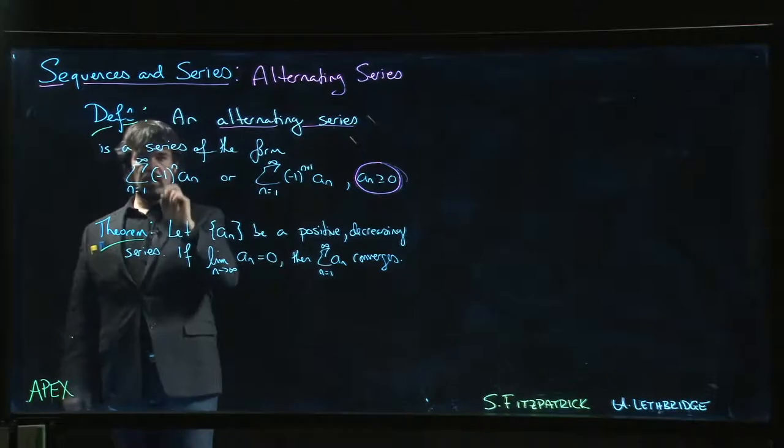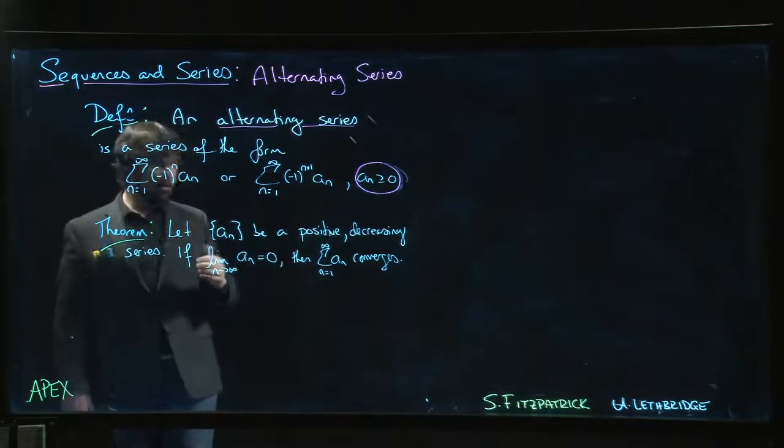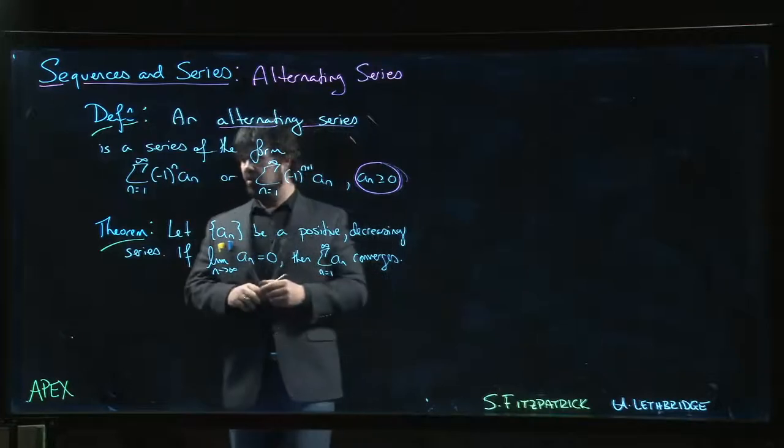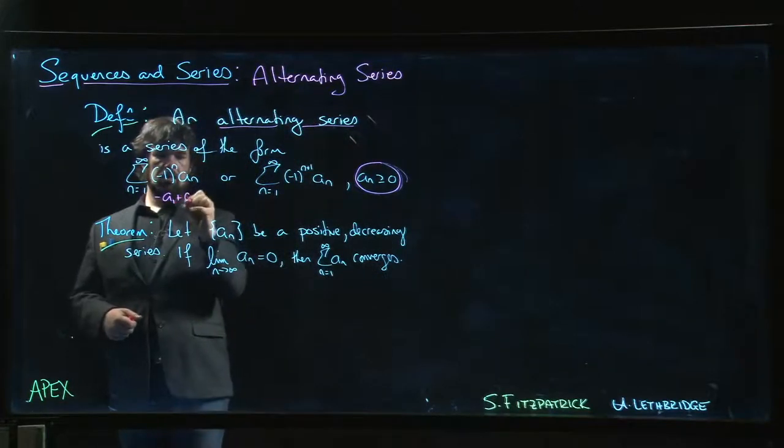So minus one to the n alternates sign. If n is even, this is plus one; if n is odd, that's minus one, swapping back and forth in sign. So the terms would be like minus a_1 plus a_2.